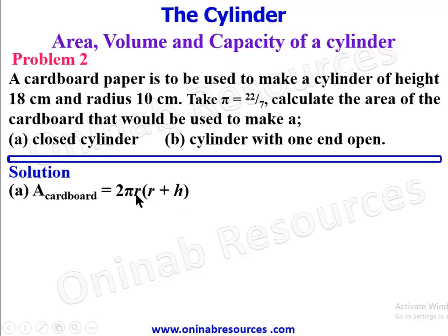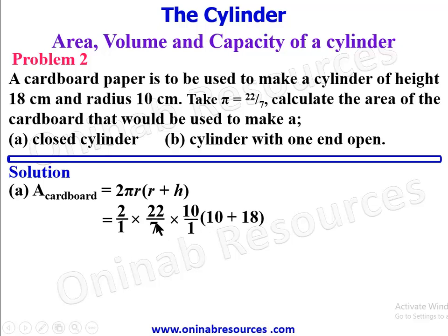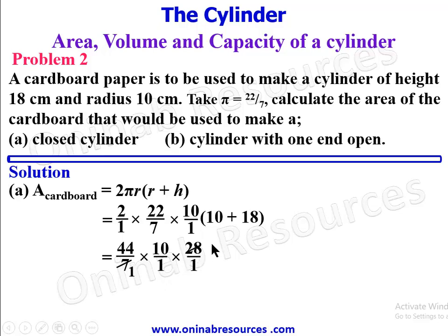Substituting π = 22/7, r = 10, h = 18: 2 × (22/7) × 10 × (10 + 18). Since 7 cannot divide these numbers, we get (44/7) × 10 × 28. Then 28 ÷ 7 = 4, giving 44 × 4 = 176. Multiplying by 10 gives 1760 cm², the area of cardboard for a closed cylinder.